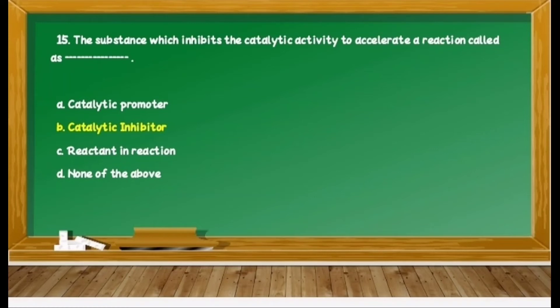Question 35: The substance which inhibits the catalytic activity to accelerate a reaction rate is called as dash dash. Options are: A) catalytic promoter/activator, B) catalytic inhibitor, C) reactant in reaction, D) none of the above. We know that this is the definition of catalytic inhibitor. Therefore, option B is correct.